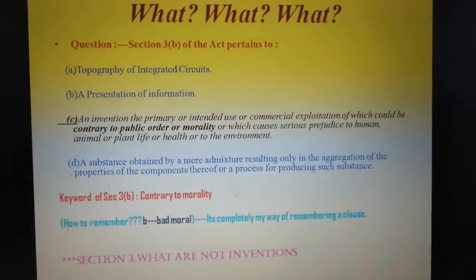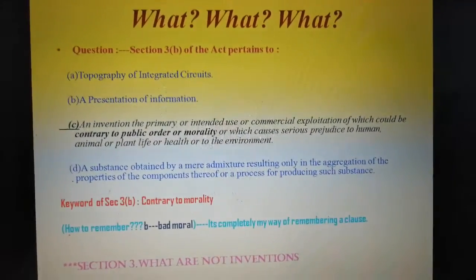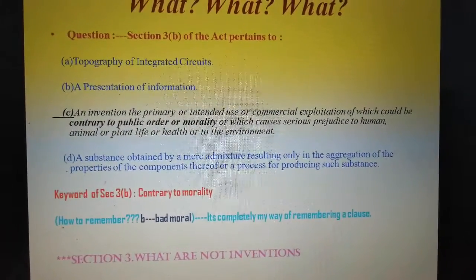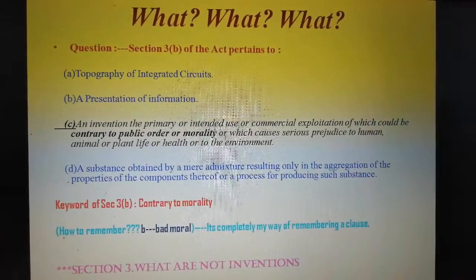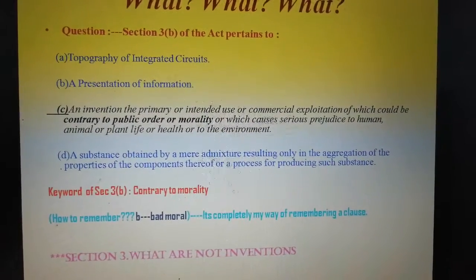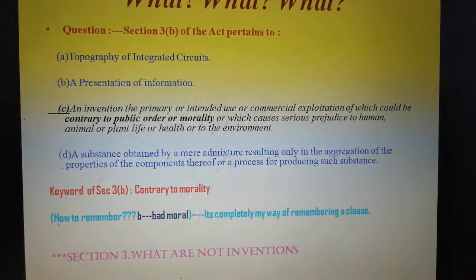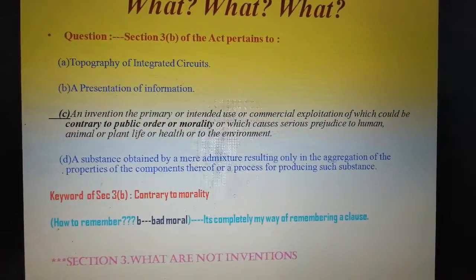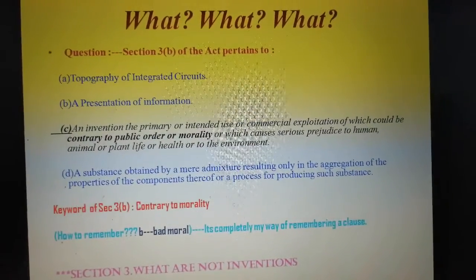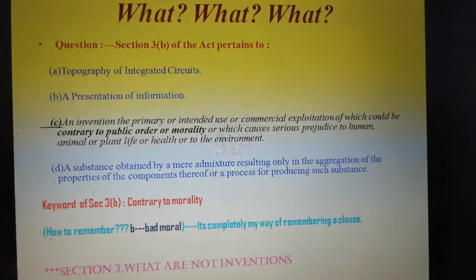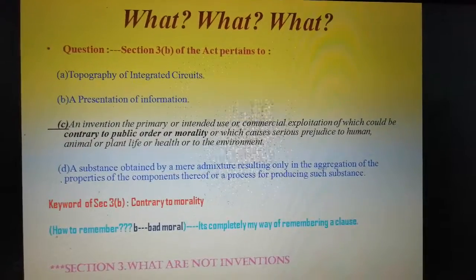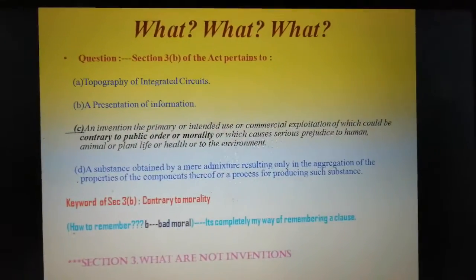Here I have written the keyword of Section 3(b) is contrary to morality. We know that there are a lot of clauses in Section 3. So here what we can do, we can remember this Section 3 clause B as B for bad moral in this way. We can just recall it or remember it and I will say that it is completely my way of remembering a clause.